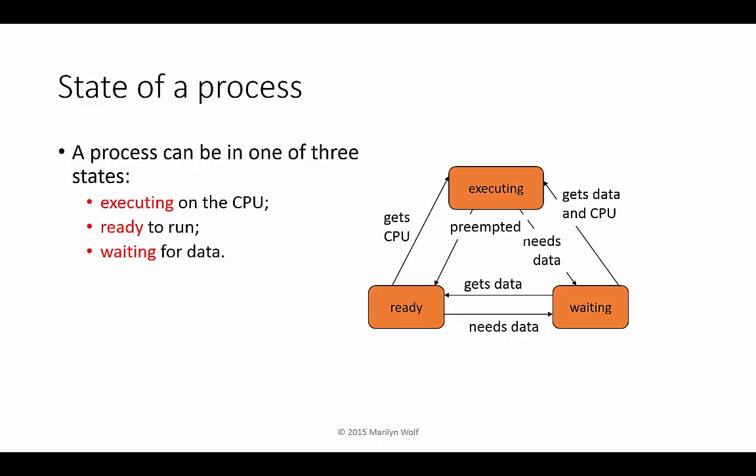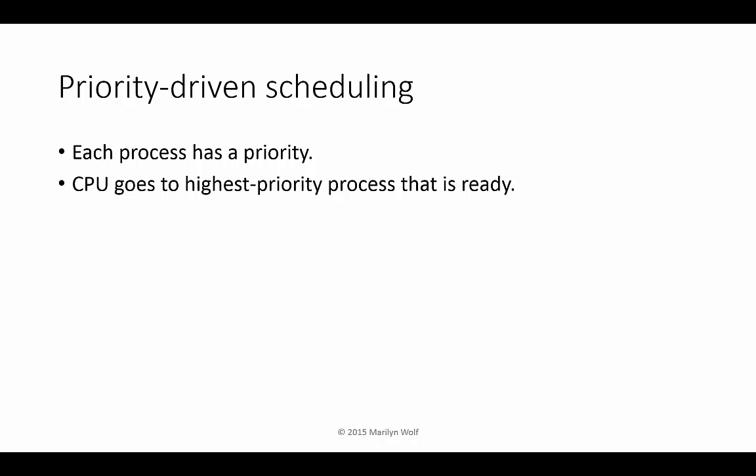A process can be in one of three states in the operating system. It can be waiting for data — for example, a control system may be waiting for the next sample in order to determine how to control the system. When that process gets its data, it's ready to run. But only one process on the CPU can be executing at any time. In priority-driven scheduling, each process has its own priority. The scheduler uses these priorities to determine what runs next. The rule is very simple: the highest priority process that's ready to run runs next. A process that's waiting will not be eligible to run; the CPU selects the highest priority among all ready processes.